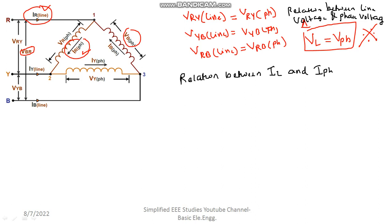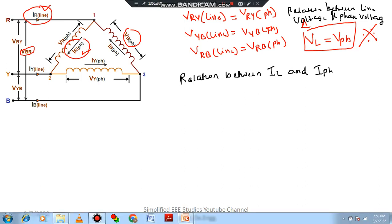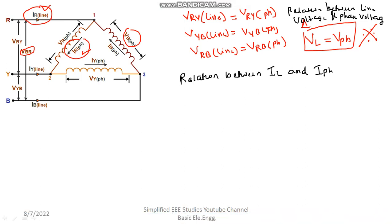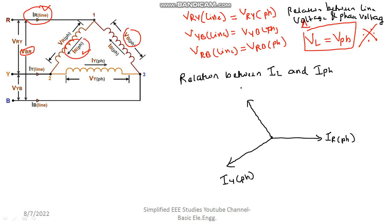Moving on to the derivation, first of all please mark all the phase currents. I am going to draw I_R first — I_R phase. Next is I_Y; I will write I_Y phase. Both are 120 degrees apart. Then I_B is 120 degrees apart from I_Y, so this should be I_B phase. You can draw neatly by using a scale. All are 120 degrees apart; you can mark the angles as well.